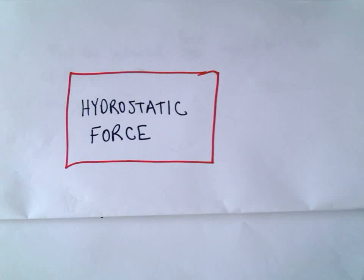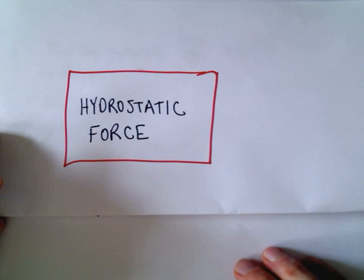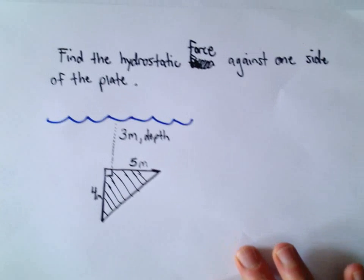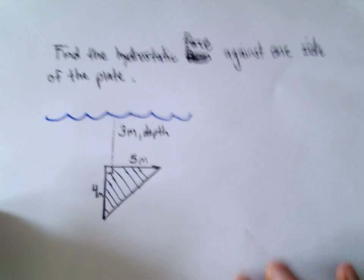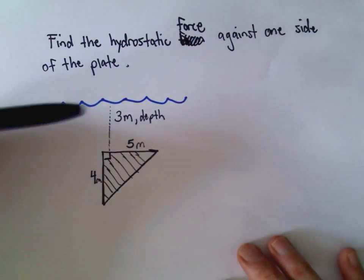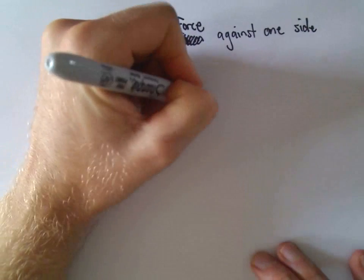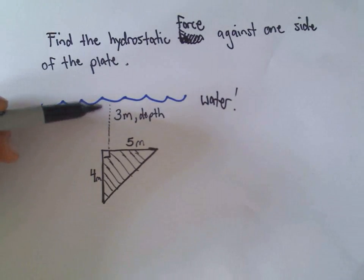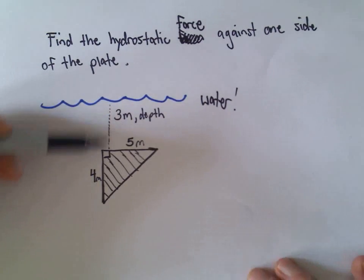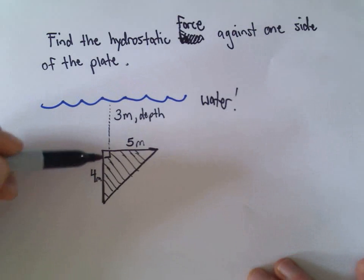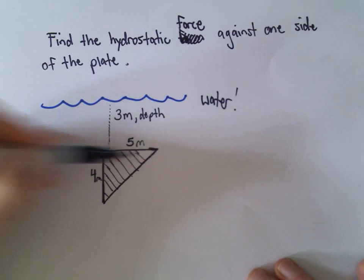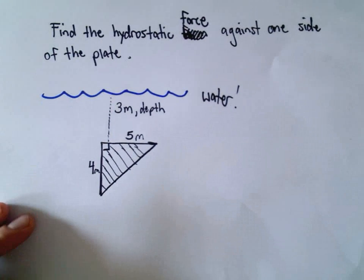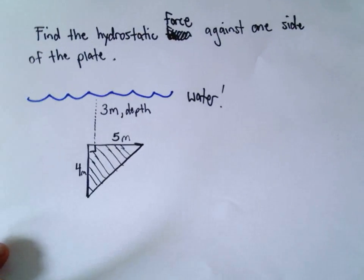In this video we're going to do an example of hydrostatic force — a full example. We're going to find the hydrostatic force against one side of a plate sitting in water at a depth of three meters. The plate is triangular, five meters across at the top and four meters tall, and we're going to find the hydrostatic force against one side of it.